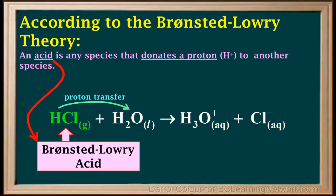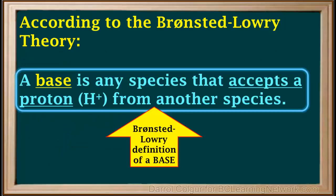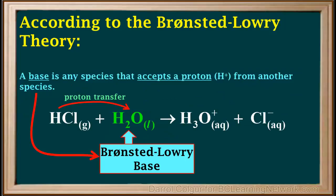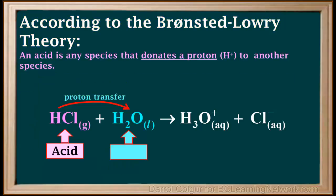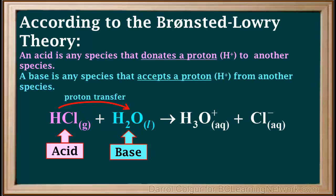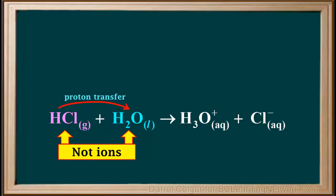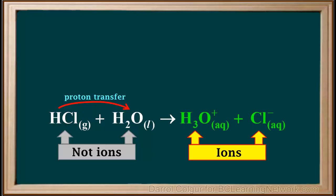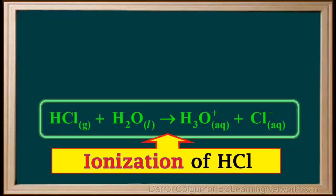Because HCl is losing, or donating a proton, according to the Bronsted-Lowry theory, it is called an acid — a Bronsted-Lowry acid, or Bronsted acid for short. A base is defined as any species that gains or accepts a proton from another species. Because H2O is gaining a proton, it is a Bronsted-Lowry base. So in this reaction, HCl is an acid and water is a base. Because the reactants are not ions but the products H3O+ and Cl- are ions, we call this the ionization of HCl.